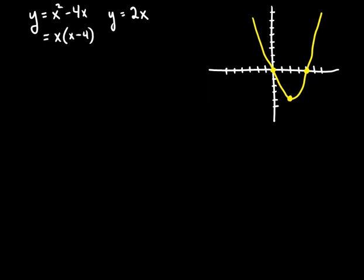Next we have the graph y equals 2x, and we know that 2x has a y-intercept of 0, and when x is equal to 4, y will be equal to 8. And so it's just a rough graph of that.